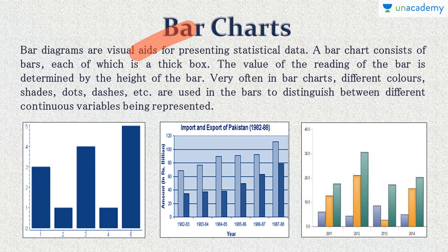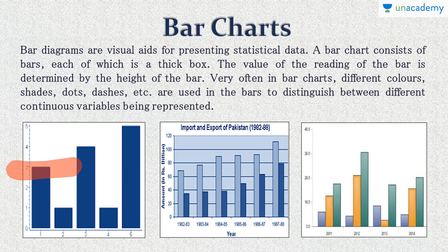What are bar charts? Bar charts are visual diagrams representing statistical data. A bar chart appears as a thick box, and the height of the box determines the value of the bar. Very often we might see bar charts in different colors, shapes, shades, dots, dashes, etc., so as to distinguish between different variables being represented.